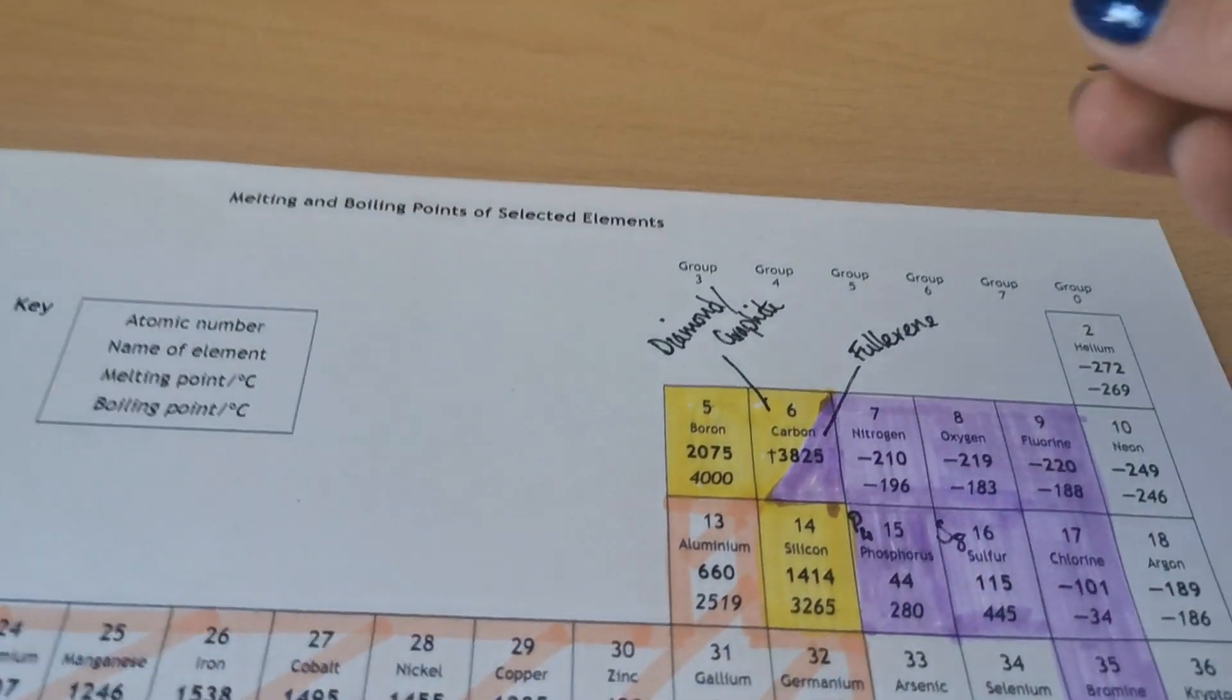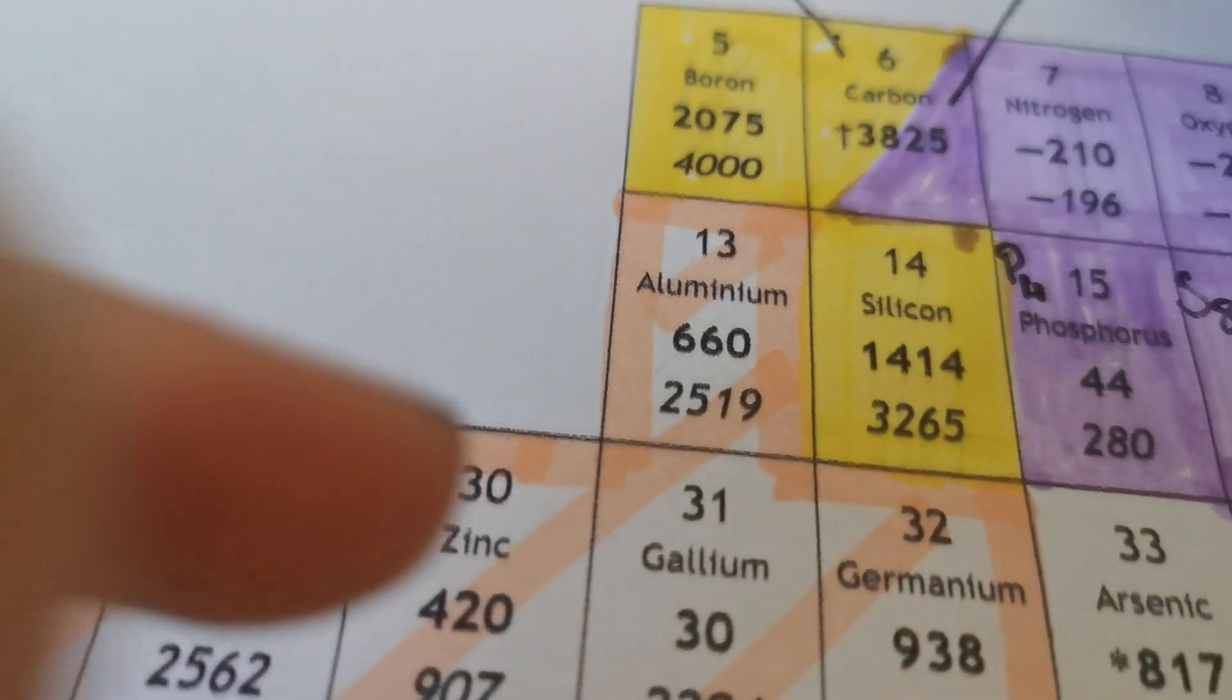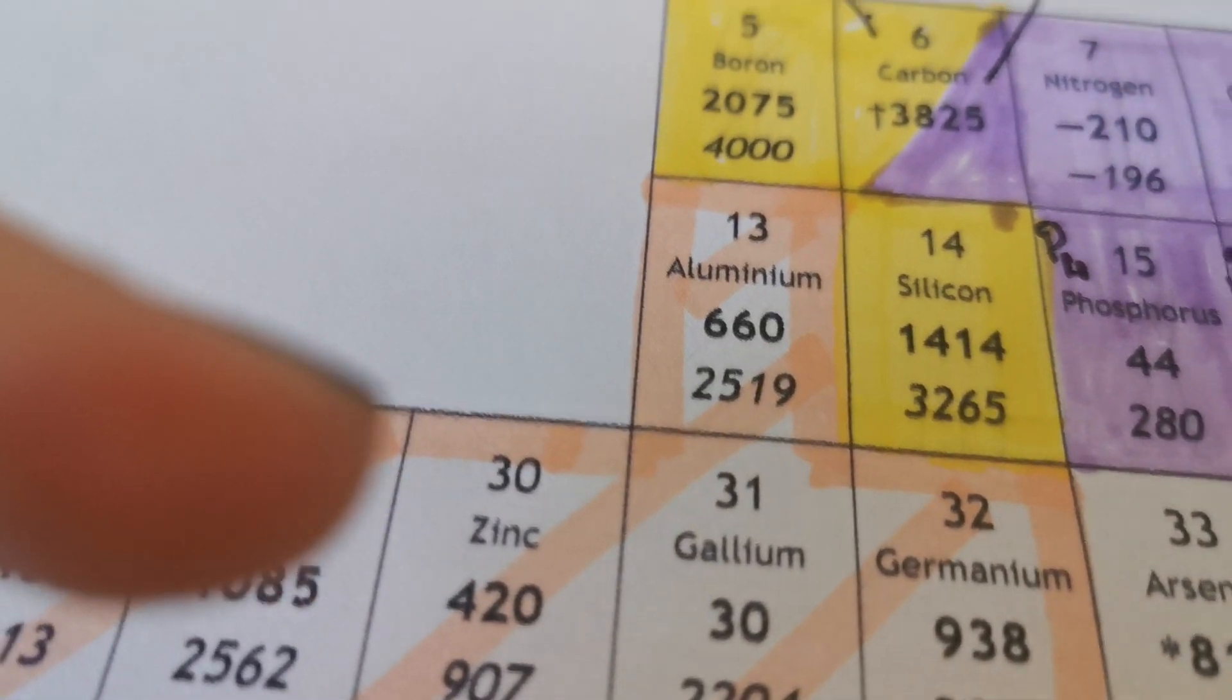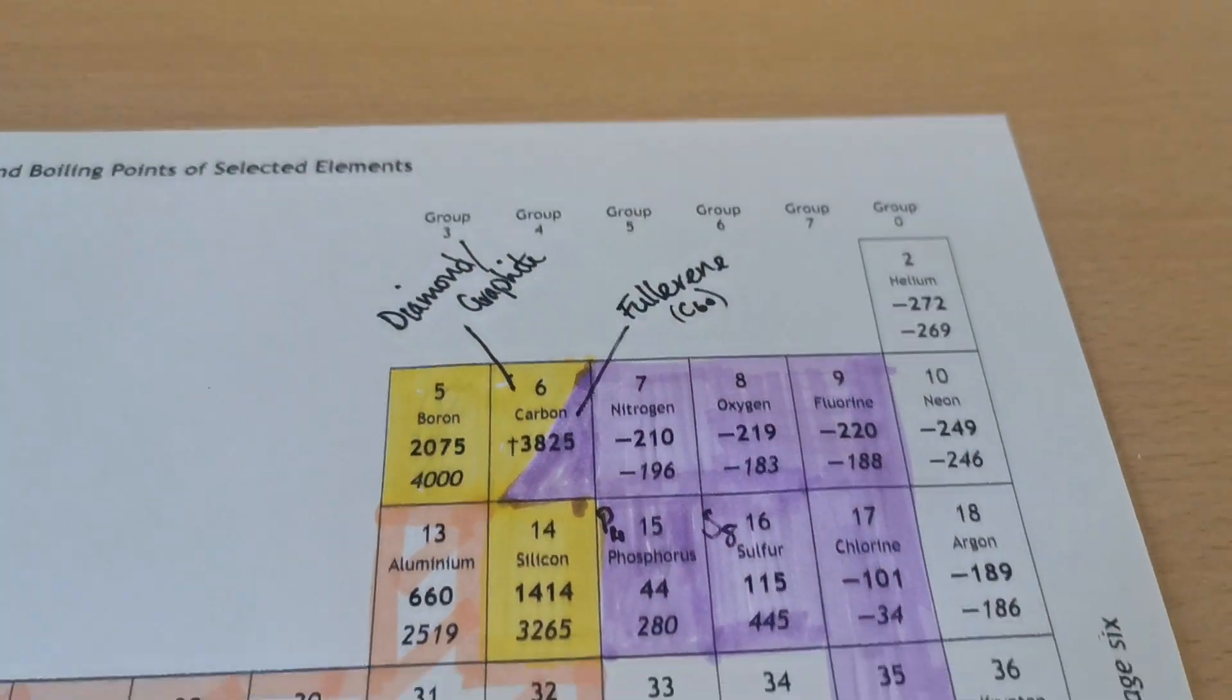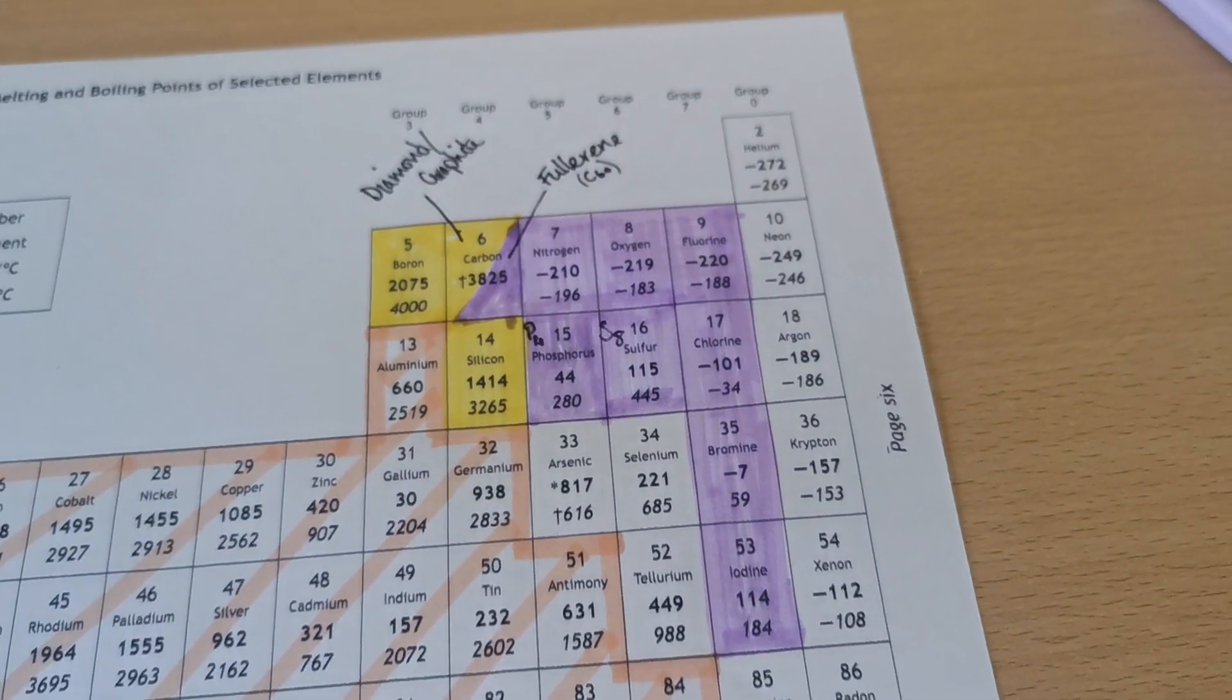One of the most common fullerene is C60. That means there's 60 carbon atoms in the fullerene ball. I'll post some pictures so you can see what they actually look like.